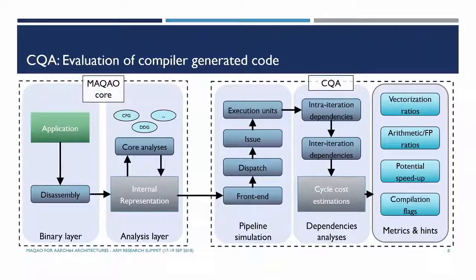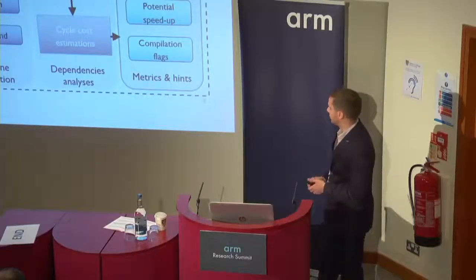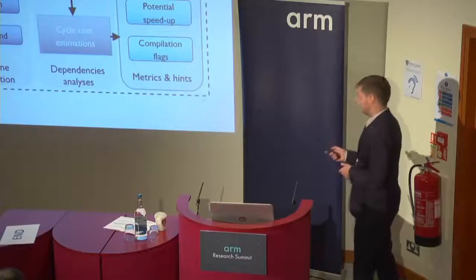The pipeline parts simulated include the front-end, dispatch, issue, and execution units. It also checks for iteration dependencies. We can estimate the performance of your loops or functions to give a cycle cost estimation. To complement that, it also performs analyses of vectorization, arithmetic and floating-point intensity, potential speedup if issues are fixed, and checks compilation flags.